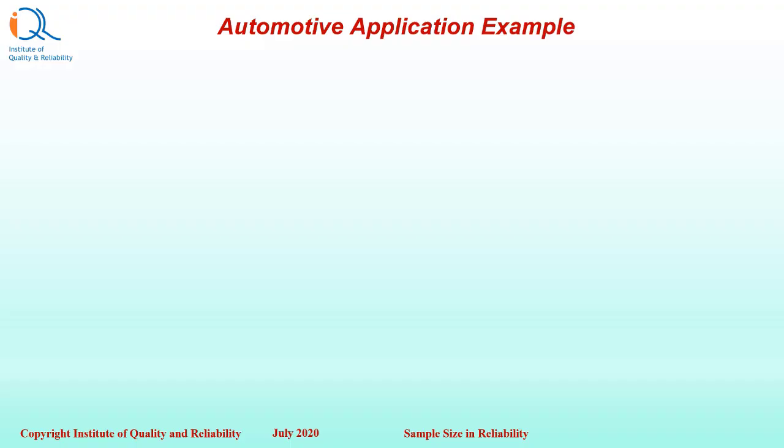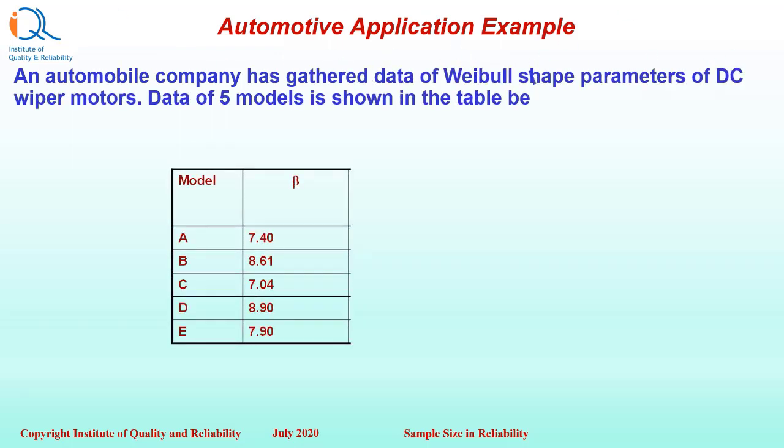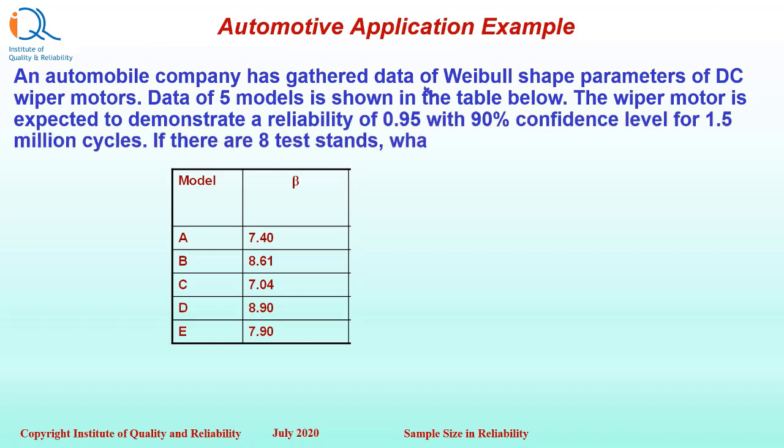Let us see another application example. An automobile company has gathered data of Weibull shape parameters of DC wiper motors. Data of 5 models is shown in the table below. The wiper motor is expected to demonstrate a reliability of 0.95 with 90% confidence level for 1.5 million cycles. If there are 8 test stands, what should be the test duration for no failures? Here is a table for the shape parameter values of the 5 models.